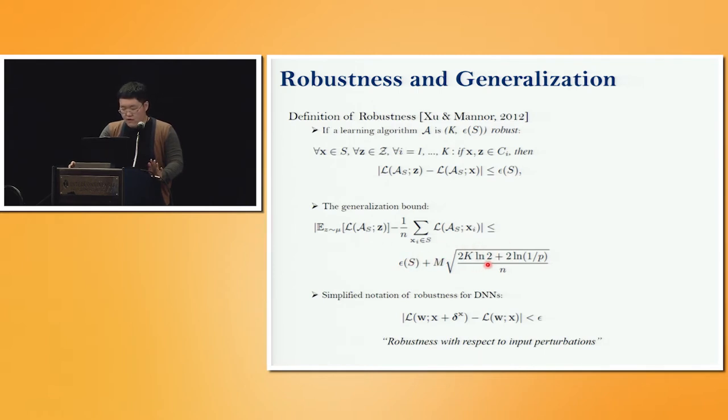From now on, for notation simplicity, we use this simplified notation for the robustness in deep neural networks.